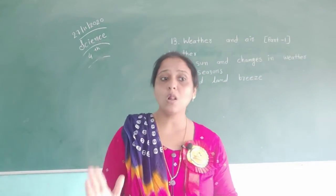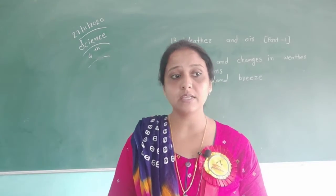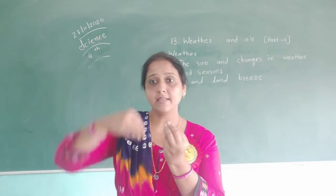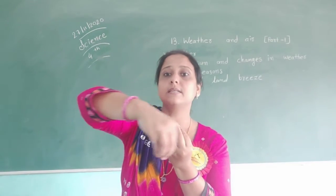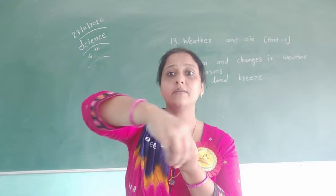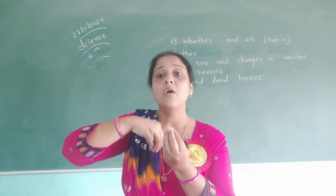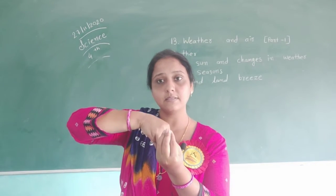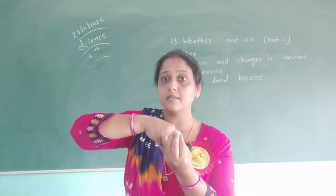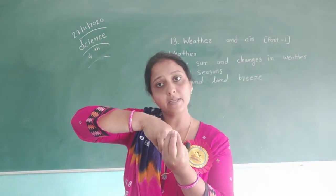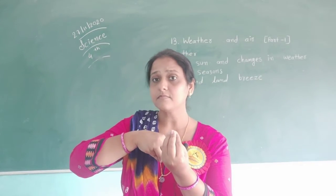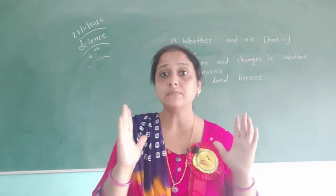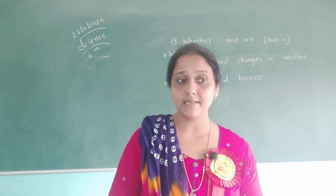At a given time, only one half of the earth is facing the sun. For example, this is the sun and this is the earth. The earth is always revolving around the sun. When one part is in front of the sun, the other part is behind, so the face position of the earth keeps changing.